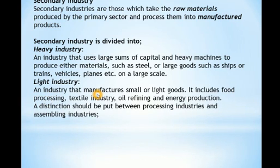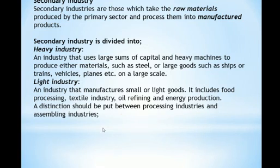Next is light industry, which is the opposite of heavy industry. These industries manufacture small or light goods using machines and employing workers — sometimes many, sometimes few. Examples include food processing industries, textile industries, oil refining, and energy production.